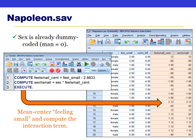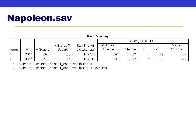Now we run the hierarchical regression, with sex and mean-centered feeling small in block one, and adding the interaction term in block two. At the bottom right of the model summary table, we see that model two — with the interaction — was significantly better than model one without the interaction. That tells us that adding the interaction term made our predictions better, in other words, the interaction term was significant. Everything in green we report in our results as the F-change test showing the significance of the interaction.